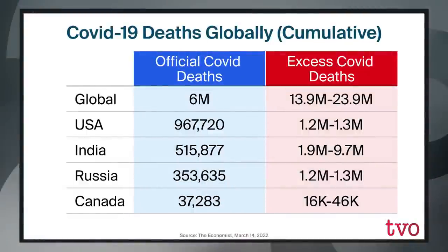Let's look at the middle of this chart and focus on India for a moment. Over half a million official COVID deaths in India, but then look at the next column — excess COVID deaths — between almost 2 million and almost 10 million. Those numbers, Brahmar, are wildly divergent. Why such a big gap there?